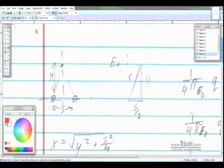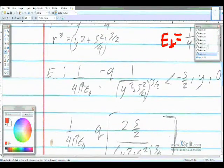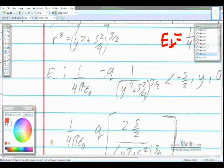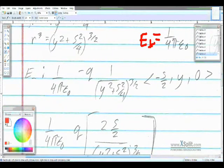Now for the other part, the negative part, we can see we have that same triangle. So really, nothing's going to change except for a few signs, because the charge, of course, the q is going to be negative, and that s over 2 is also negative. So we just get the constant times the q times the 1 over y squared plus s squared over 4 to the 3 halves, and a vector.